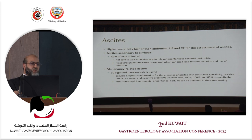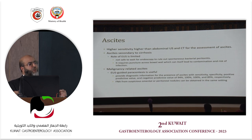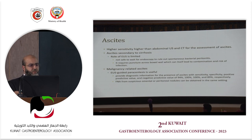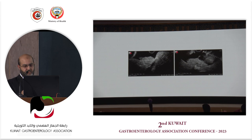EUS is more sensitive than conventional ultrasound or CT for detecting small amounts of ascites. In cirrhosis-related ascites the role is limited, as waiting for endoscopy to perform paracentesis and puncturing across the bowel wall increases contamination risk. However, in malignancy-related ascites, EUS provides excellent diagnostic sensitivity and specificity, and allows FNA of omental or peritoneal deposits in the same setting. A demonstration shows the ascitic fluid and a mural nodule being sampled by FNA.